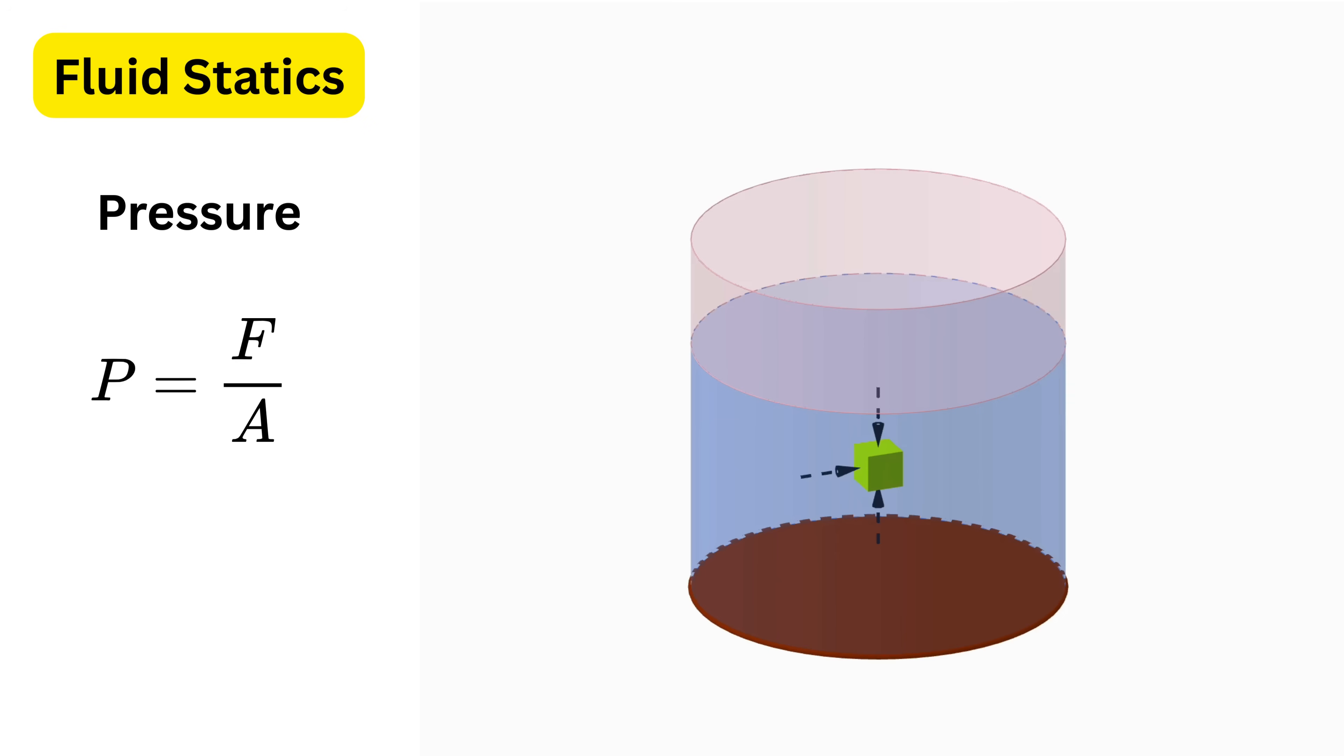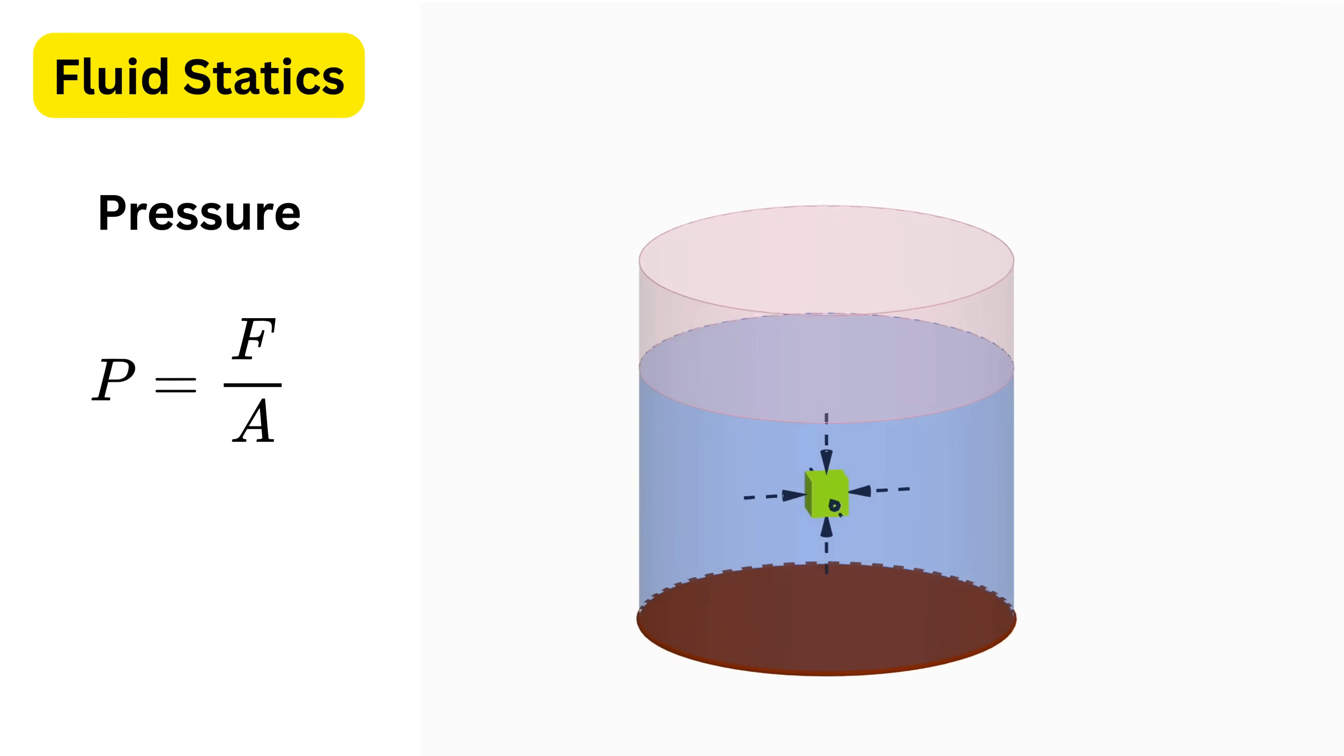On the left face of the cube, the pressure force acts horizontally toward the right, directly normal to that face. On the right face, the pressure acts horizontally toward the left. Similarly, on the front and back faces, the pressure acts perpendicular to each face, pushing inward.